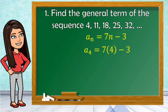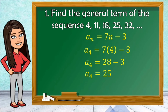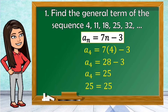Let us use the fourth term to check if the general term is correct. A sub 4 is equal to 7 times 4 minus 3. A sub 4 here is 25. 7 times 4 is 28, and 28 minus 3 is 25. The fourth term in our sequence is also 25. Therefore, the general term or the nth term of this sequence is a sub n is equal to 7n minus 3.